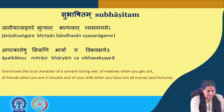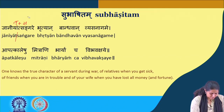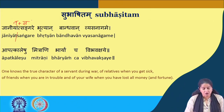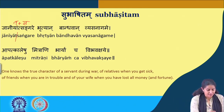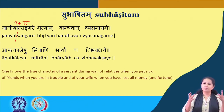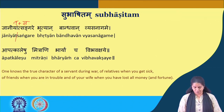A grammatical analysis: janiyat sangare — ta plus sa, sangara meaning 'war'. Bhrityan, bandhavan — pullinga, bahuvachanam, dvithya vibhakti. Vyasanagame — in the time of difficulty. Apat kaleshu — apat kala is a samasthapadam meaning 'times of difficulty'. Mitrani and bharyam cha vibhavakshaye — vibhu is wealth, so when wealth is reducing and she stays with you, you know a true wife.